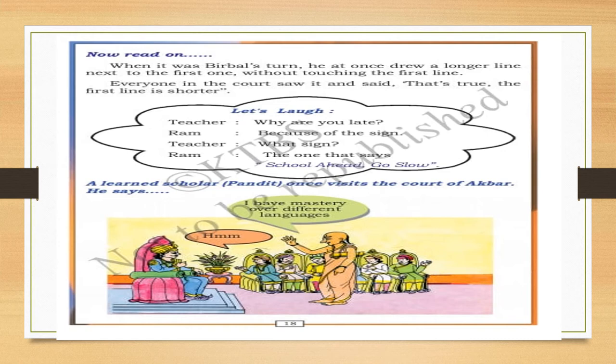Next, there is one joke. There is a conversation between a teacher and a late-coming student. His name is Ram. The teacher asks: why are you late? Ram replies: because of the sign. That sign is a signal board that reads 'School ahead, go slow.' So the vehicles go slow near the school.